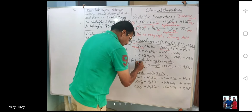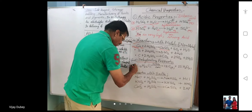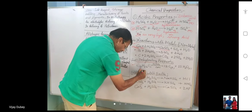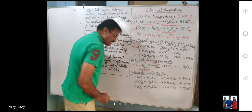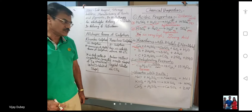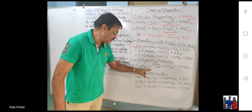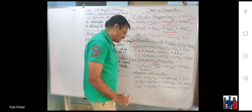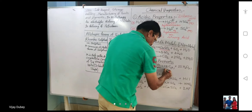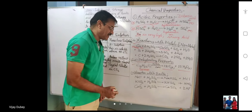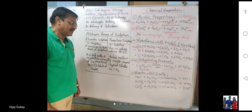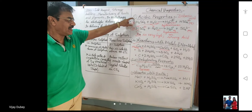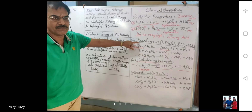Another important property is that sulfuric acid acts as a dehydrating agent. Sucrose (C12H22O11), a disaccharide, in the presence of concentrated H2SO4 is dehydrated — it loses water and carbon is liberated. This demonstrates the dehydrating property of sulfuric acid.